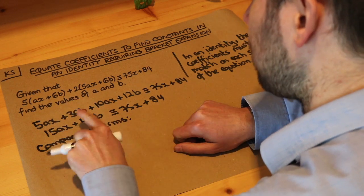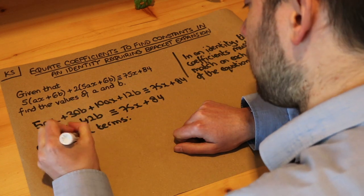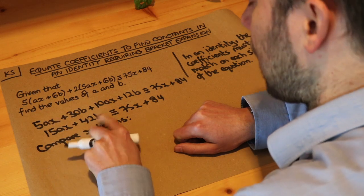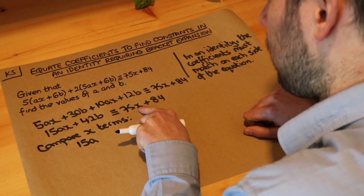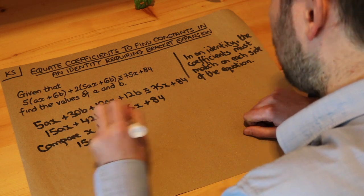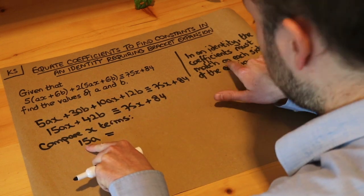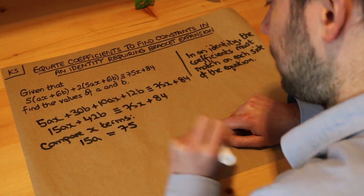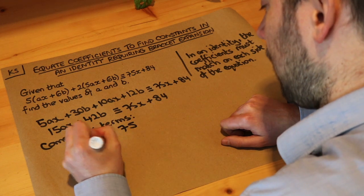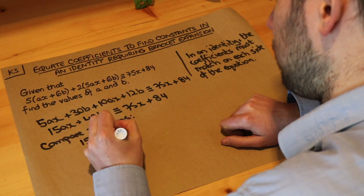So we compare the coefficients of the x terms. We've got 15a on the left-hand side, that's not an x term, and on the right-hand side the coefficient of that x term is 75. So because this is an identity, they have to match as per this, so we get that, and then just dividing both sides by 15, we get a is equal to 5.